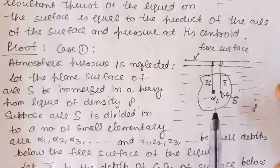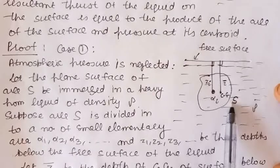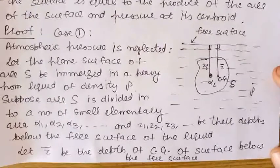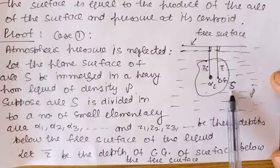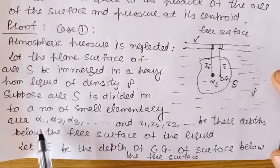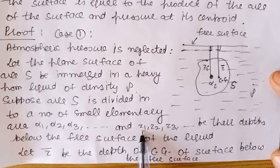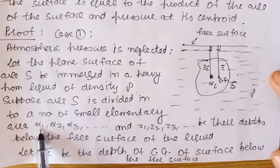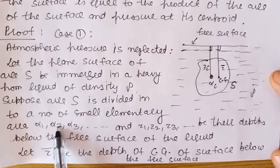Let us consider a plane surface having the area S. This plane area is immersed in a heavy homogeneous liquid, and let us take the density of this liquid as rho. Let us divide this area S into a number of elementary areas, denoted by alpha 1, alpha 2, alpha 3 and so on. Let Z1 be the depth of elementary area alpha 1 below the free surface of the liquid, and Z2 be the depth of elementary area alpha 2 below the free surface of the liquid. In general, Zi is the depth of elementary area alpha i below the free surface.